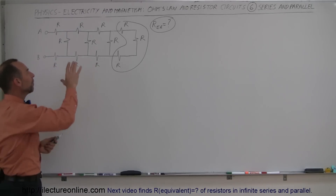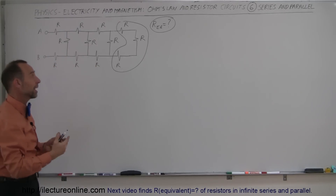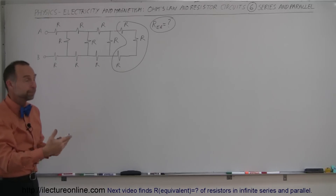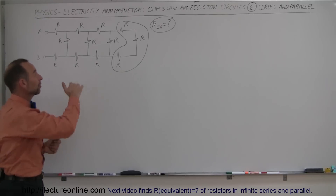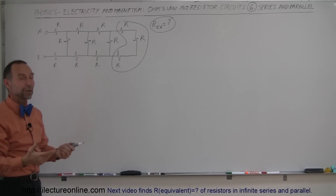Sometimes instead of using numbers to indicate the resistance, we simply say each resistor has value R. Since they're in series, the total of them would be 3R.